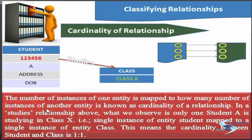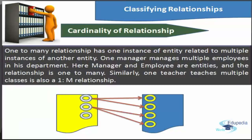The number of instances of one entity mapped to the number of instances of another entity is known as the cardinality of a relationship. In a studies relationship, one student A is studying in class 10th — a single instance of the student entity is mapped to a single instance of the class entity. This means the cardinality is one-to-one. A one-to-many relationship has one instance of an entity related to multiple instances of another entity. For example, one manager may manage multiple employees. Similarly, one teacher teaches multiple classes is also a one-to-many relationship.